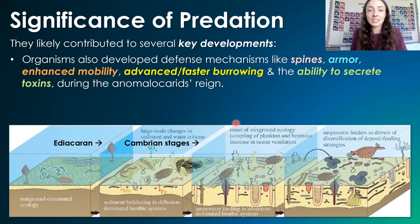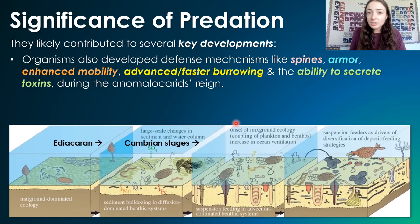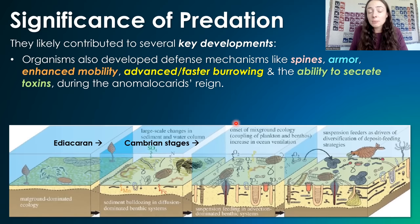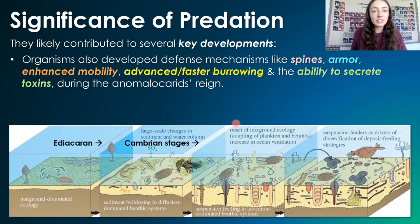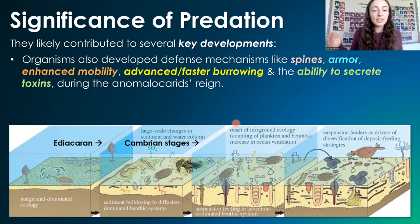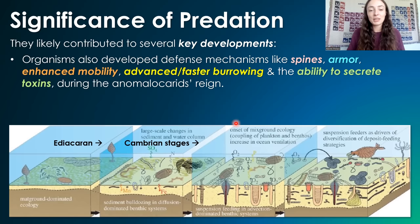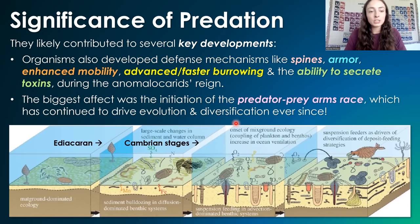But it's not just skeletons that organisms had to evolve. Other defense mechanisms like spines, armor, enhanced mobility, faster and more advanced burrowing abilities, and the ability to secrete toxins — all of these things evolved and greatly increased in abundance and diversity at this time across multiple lineages, in large part because of the pressure from anomalocaridids.